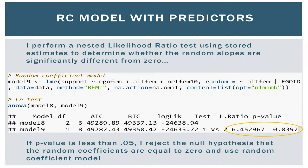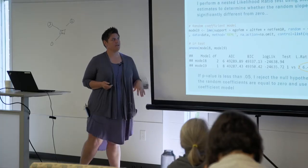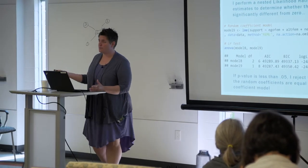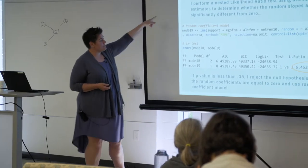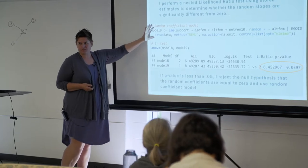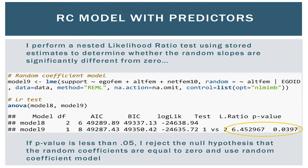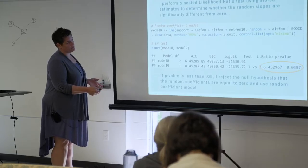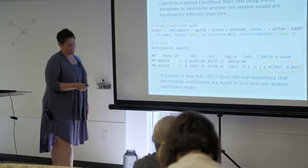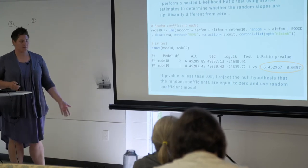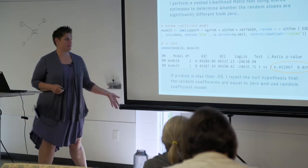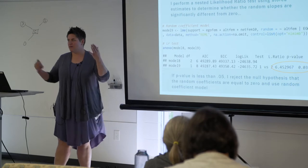Your first step in the random coefficient model is to determine whether you need one. I perform a nested LR test using stored estimates, which allows me to determine whether the random slopes are significantly different from zero — are they adding anything to the model? I run my random coefficient model, having already stored the results of my random intercept model, and then just do an LR test using the ANOVA command. The p-value is 0.04, so I can reject the null hypothesis that the random coefficients are equal to zero, which means I need to use the random coefficient model. If your p-value is less than 0.05, go ahead with the random coefficient.